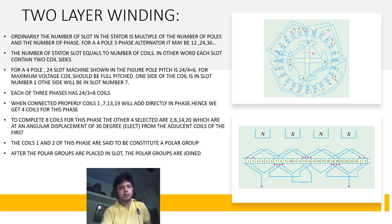For a 4-pole 24-slot machine, as shown in the figure, the pole pitch is 24 ÷ 4 = 6. For maximum voltage the coil should be full-pitched, meaning that if one side of the coil is in slot 1, the other side should be in slot 7. These two slots, 1 and 7, are 1 pole pitch apart, or 180 degrees electrical apart.